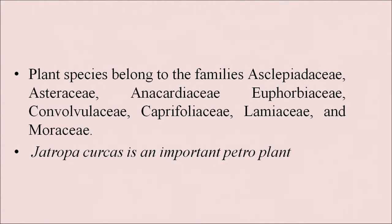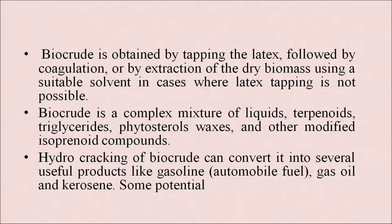Jatropha curcas is an important petro plant. Biocrude is obtained by tapping the latex followed by coagulation, or by extraction of dry biomass using a suitable solvent where latex tapping is not possible. Biocrude is a complex mixture of liquids, terpenoids, triglycerides, phytosterols, waxes and other modified isoprenoid compounds. Hydrocracking of biocrude can convert it into several useful products like gasoline, gas oil and kerosene.